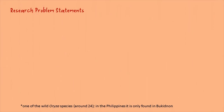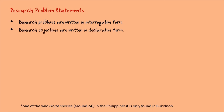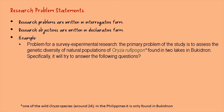Now let's continue to learn more about research problems, focusing on problem statements. In lecture three you learned about the characteristics of research problems and objectives. Research problems are written in interrogative form and research objectives are written in declarative form. Research objectives try to address the research problems. Let's have an example using a problem statement on Oryza rufipogon.